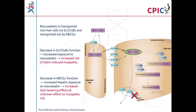Patients with decreased ABCG2 function have increased exposure to rosuvastatin in the liver. This can increase the cholesterol-lowering effects of rosuvastatin, but the impact on myopathy risk is unknown.